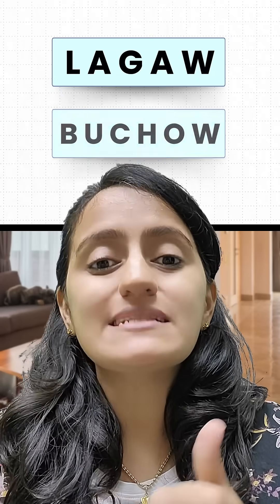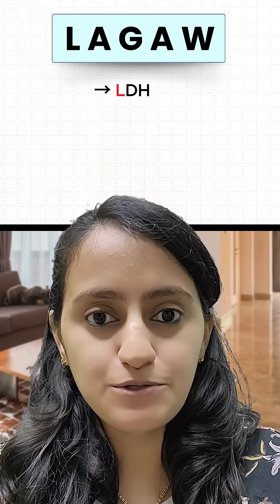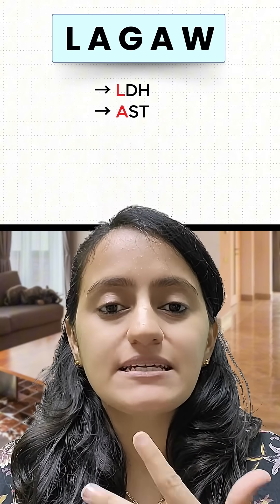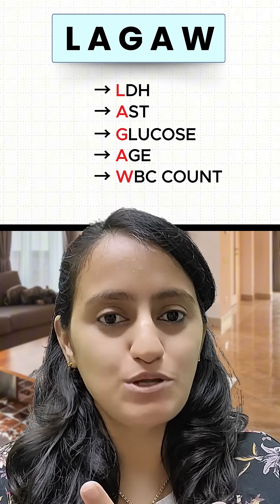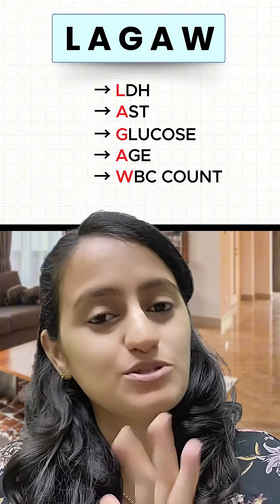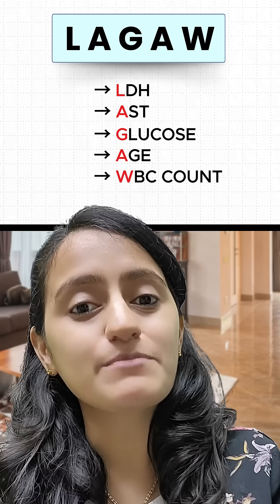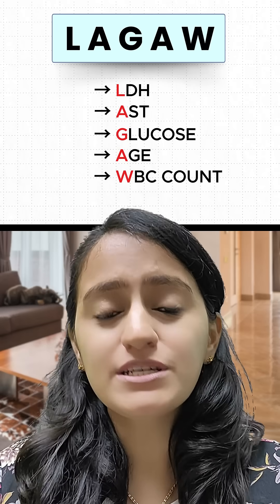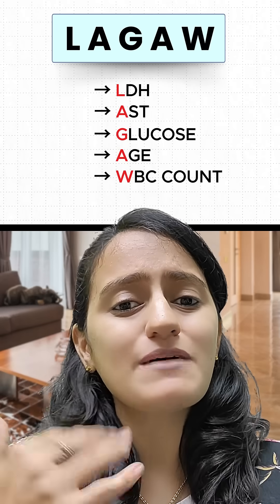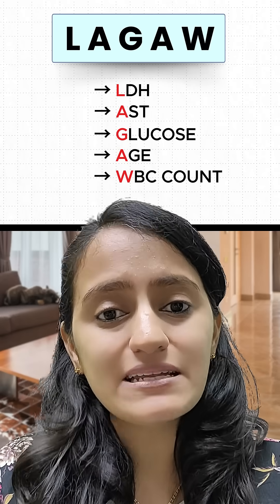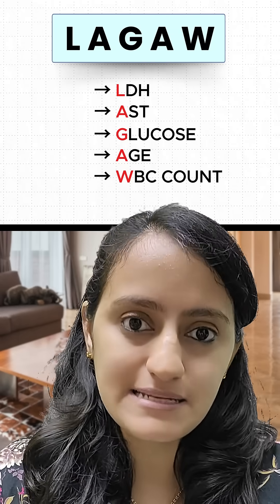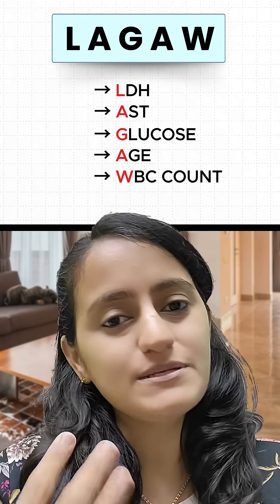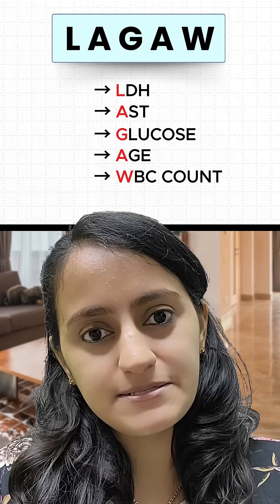So what is LAGAW? L for LDH, A for AST, G for glucose, A for age, and W for WBC count. These are the five parameters at admission, and all these parameters are increasing — glucose also increases, there is hyperglycemia, and WBC count increases.